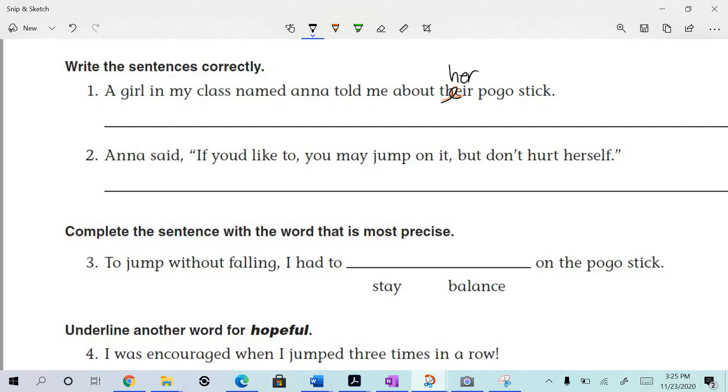So we're going to do that: her pogo stick, right? Okay, a girl in my class named - what don't we... what's a proper noun here? We need to fix this. Yes, right here. Anna. A girl in my class named Anna told me about her pogo stick. I think that might be it. A girl in my class named Anna told me about her pogo stick. Yeah, that's it. Two corrections there.